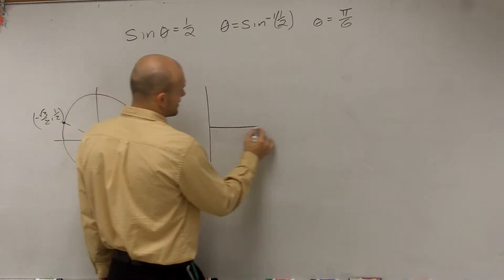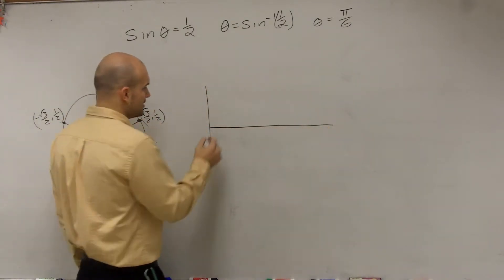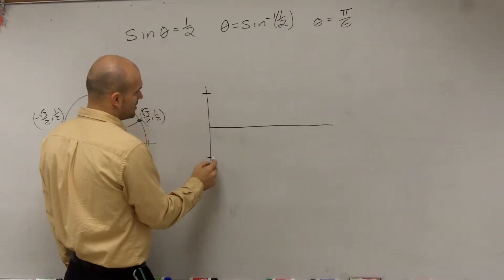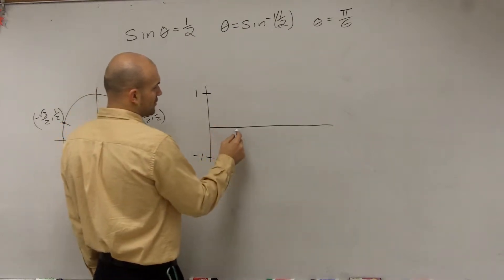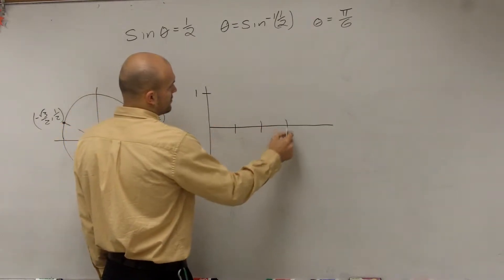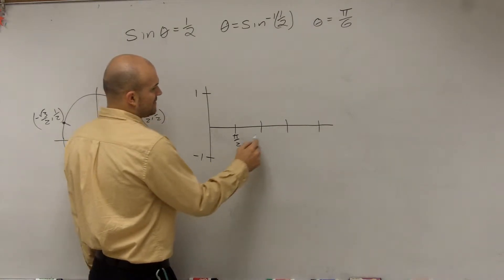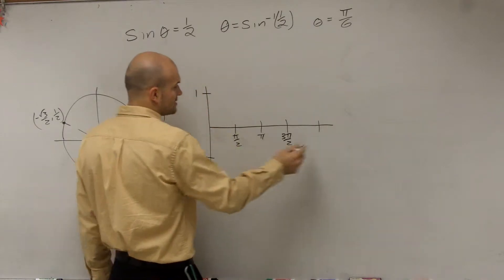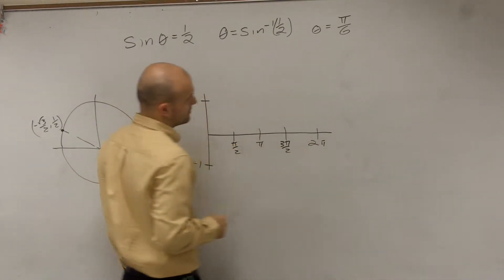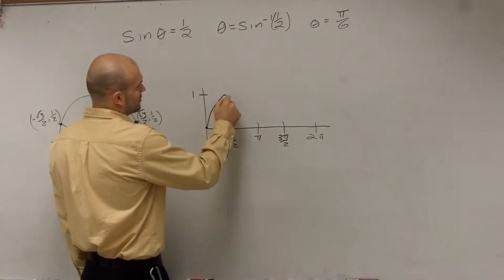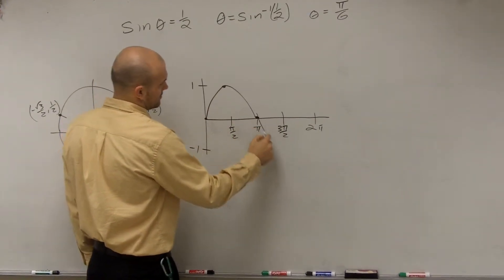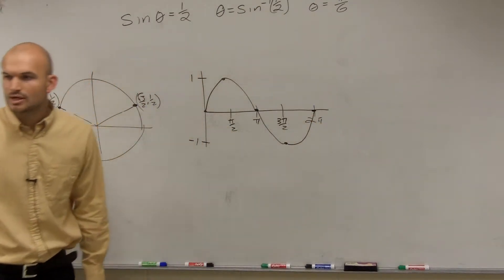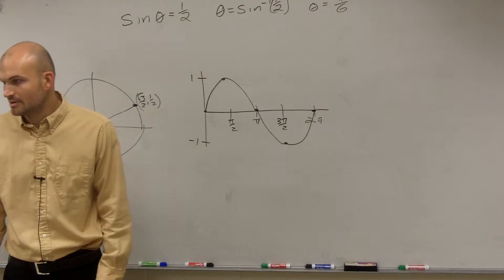If I'm going to draw out the sine graph, we'll do the initial period here. The sine graph goes up to 1, down to -1. We have four critical points at π/2, π, 3π/2, and 2π. Remember the first critical point goes up, down, down, back up - that's our initial period.